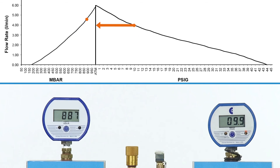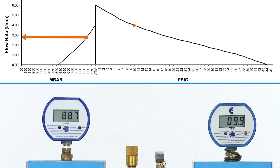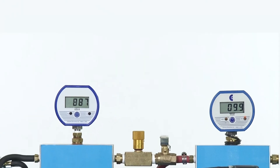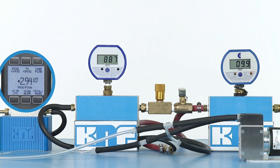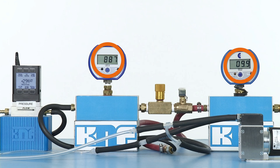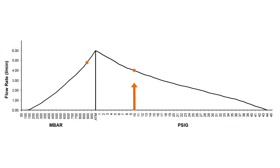Through a simple manipulation of the flow curve and chart using the two data points, the curve indicates an estimated flow rate of just under 3 liters per minute. A flow meter connected to the system confirms the estimate — 2.94, or approximately 3 liters per minute, is shown on the flow meter. To summarize, when both vacuum and pressure conditions are known, the flow curve of the pump can be used to estimate the flow rate.